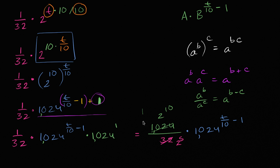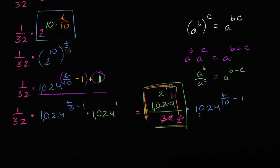So this is going to be 2 to the 10 minus 5, or this whole thing is just going to be 2 to the 5th power, or 32. So this is going to be 32 times 1024 to the t over 10 minus 1.